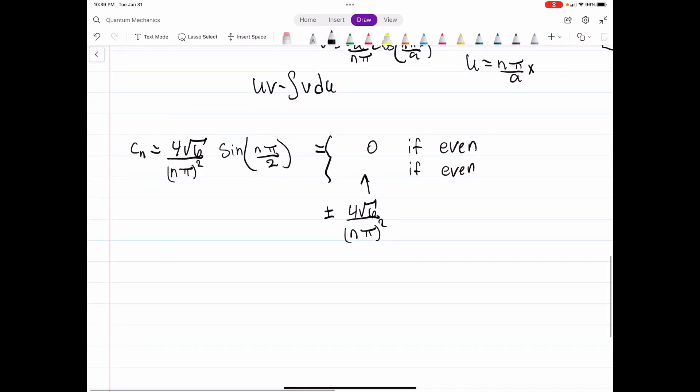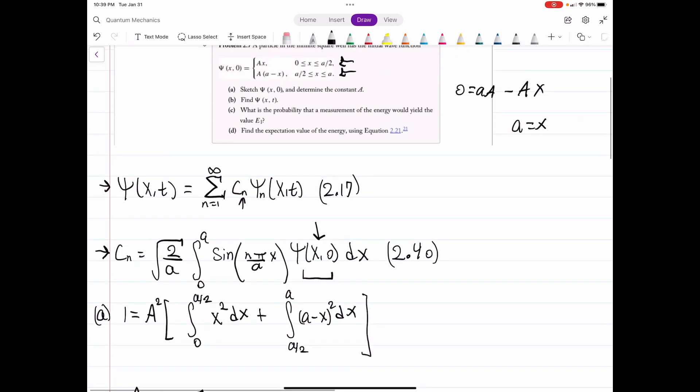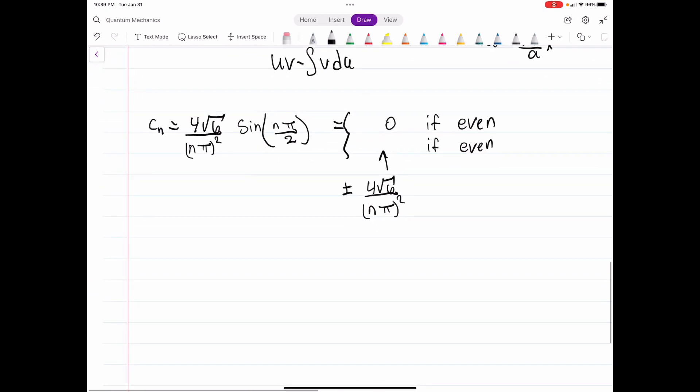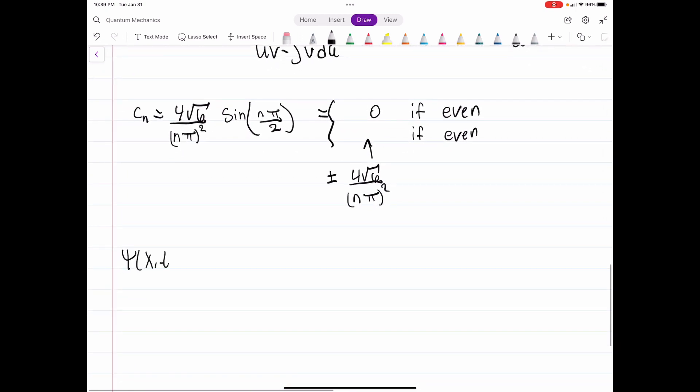Now then, it should be pretty straightforward to find our psi because all we have to do is plug it into our equation. So I didn't write it down actually here, so I need to write it down now. So our entire wave function is the summation n equals 1 to infinity C sub n, 2 over a square root, sine of n pi over a x, and then we also need to add, of course, the time dependence part, which is e to the minus i n squared pi squared h bar divided by 2m a squared all times t.